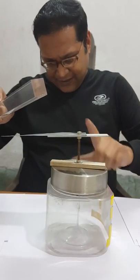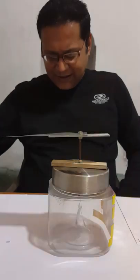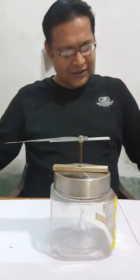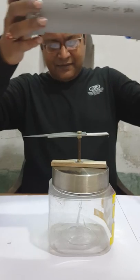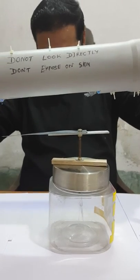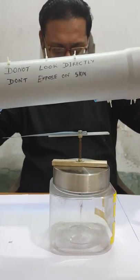Now again I make it converge, and by releasing it becomes positively charged. Now again I am bringing my UV light over here. You can see the leaf converges immediately.